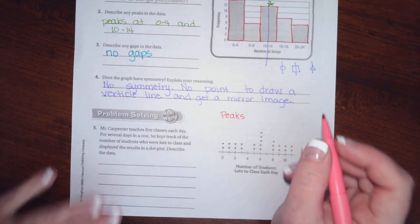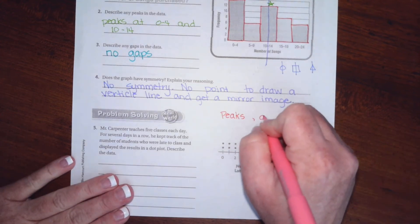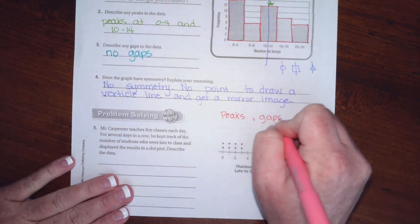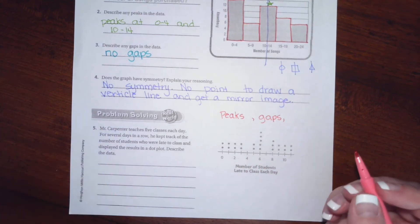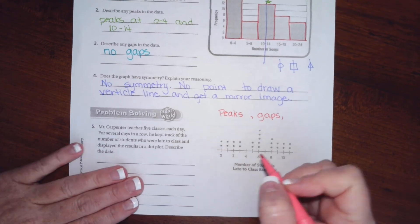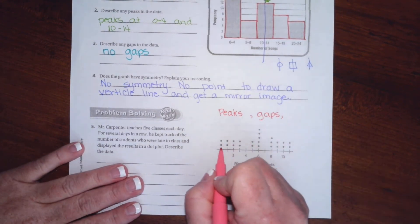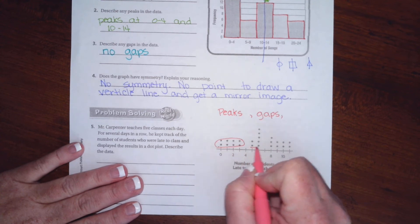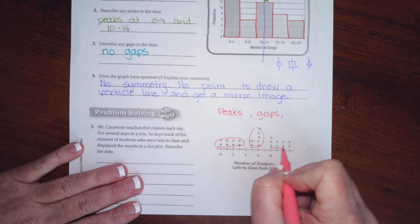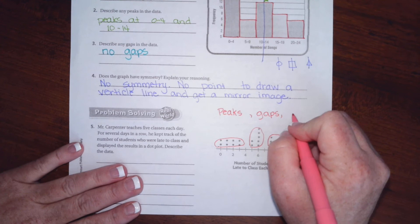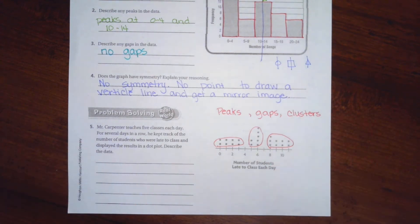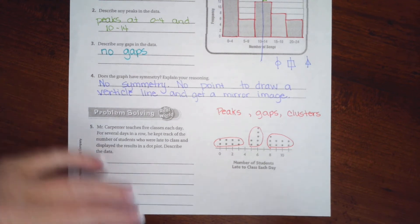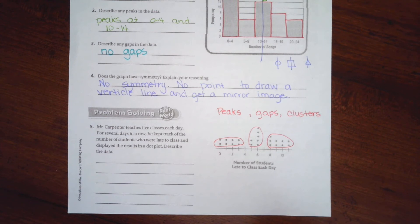I want you to find peaks, I want you to find gaps. Are there any places where there are no numbers? And I want you to find clusters. Now clusters is a little bit new on this. So here's a cluster, here's a cluster, and here's a cluster. You should be able to find peaks, gaps, and clusters now and describe them.